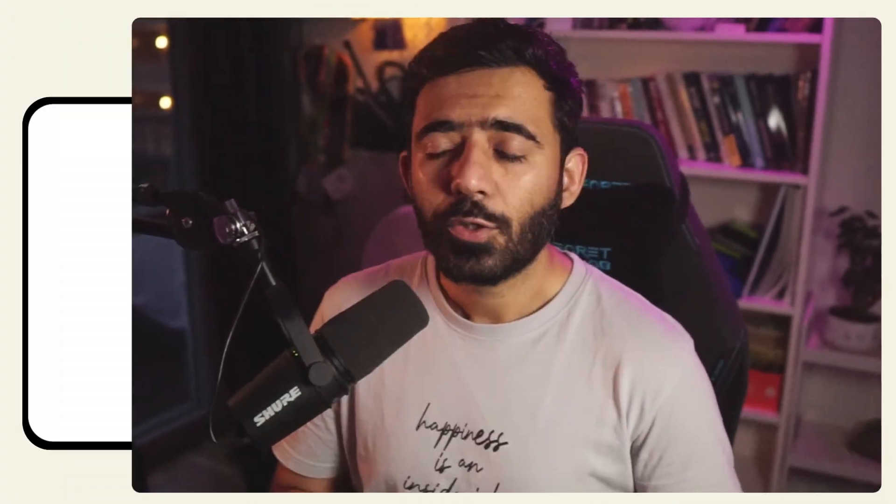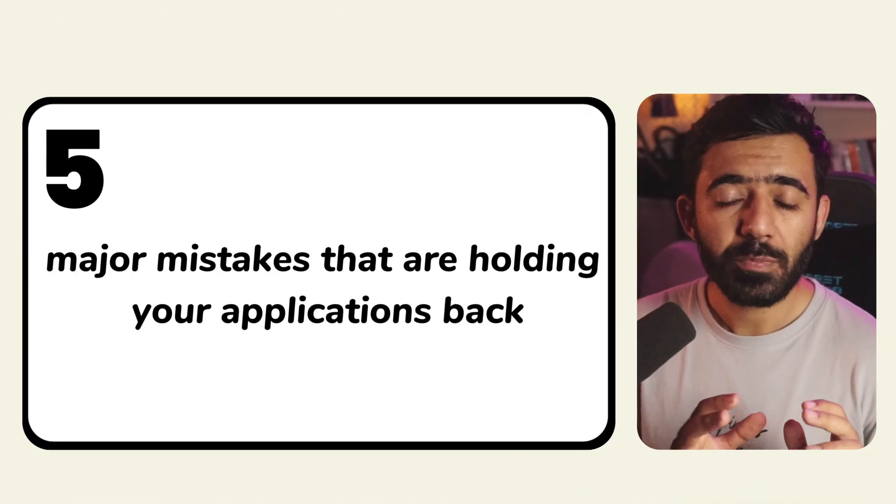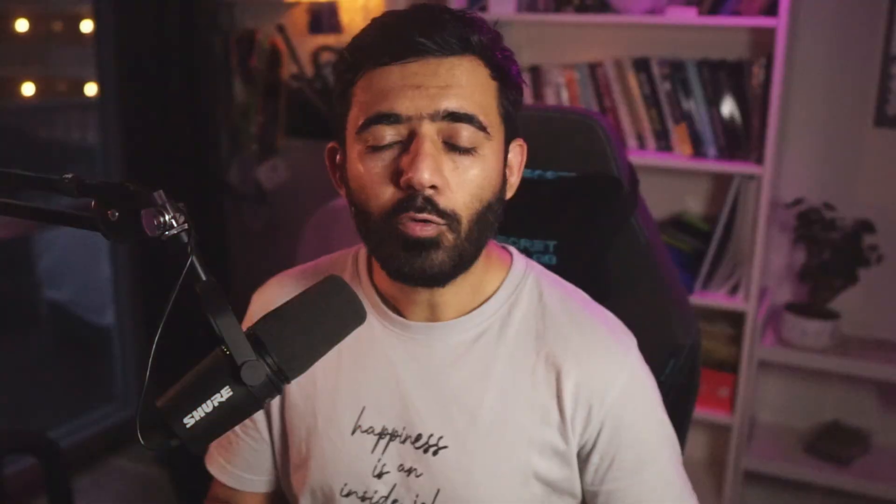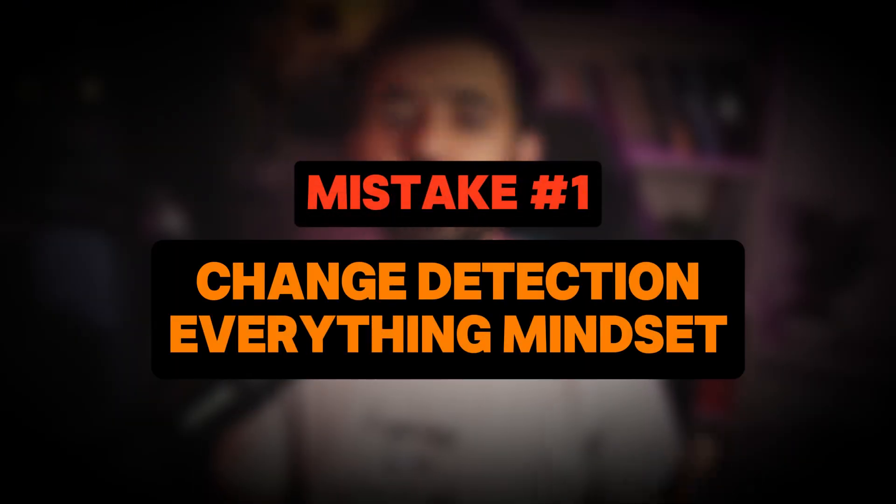I've reviewed countless Angular applications and worked on many myself, and I see the same performance-killing mistakes over and over again. Is your app feeling sluggish? Is your state management a tangled mess of subscriptions and streams? You are not alone. Today we're breaking down five major mistakes holding your applications back, and I'll show how to fix them with a modern signal-based approach. Stick around because mistake number five is the one that defines your future as an Angular developer.